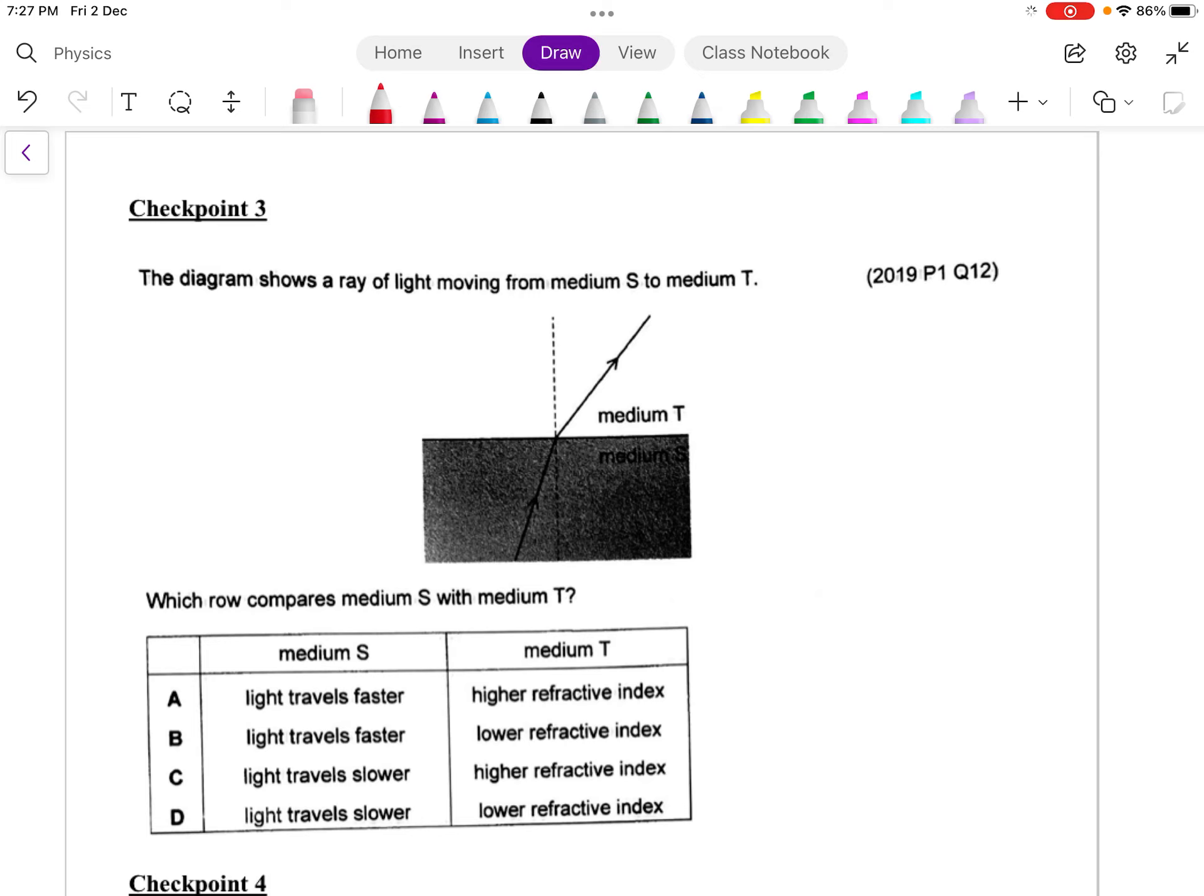This diagram is showing a ray of light moving from medium S to T, so which will compare the medium S with medium T? You can see that in medium S, the light is closer to the normal. When you enter medium T, the light bends away from the normal. This tells me that the speed of light in medium T is greater. And for medium S, the speed of light is definitely smaller.